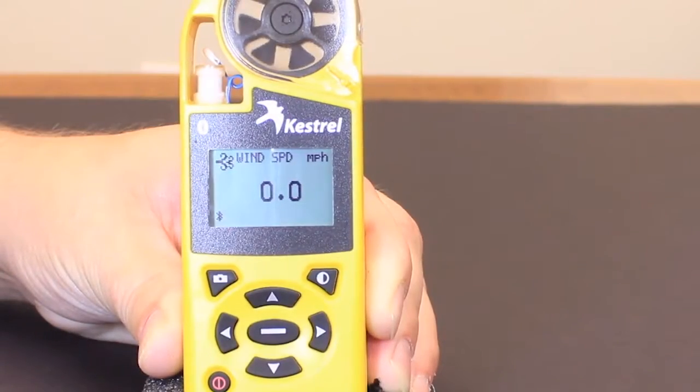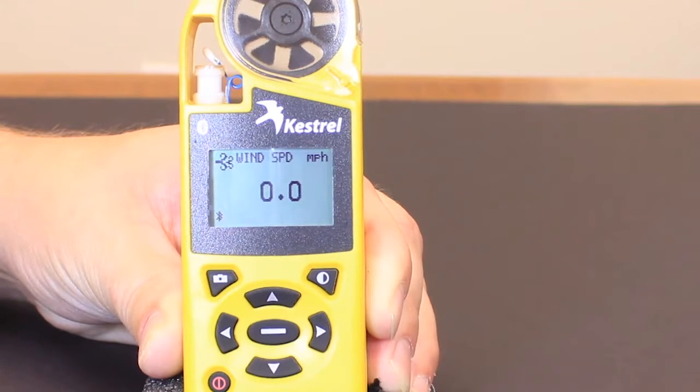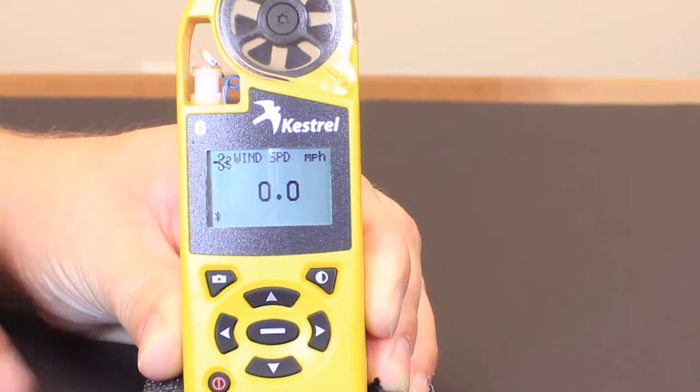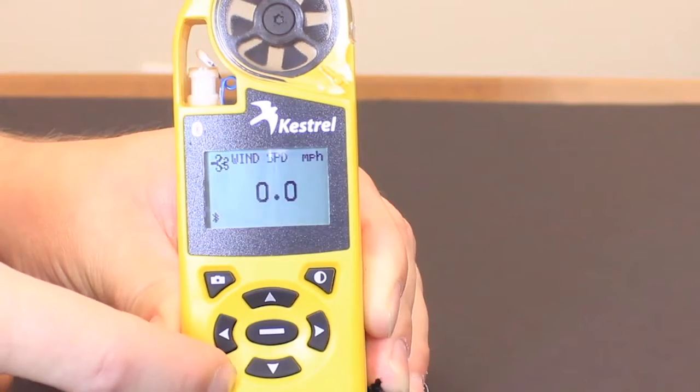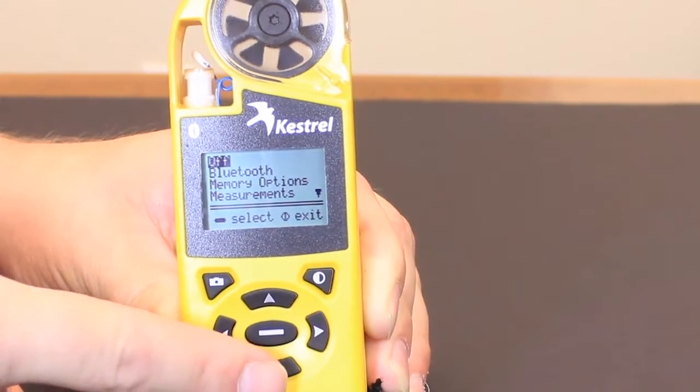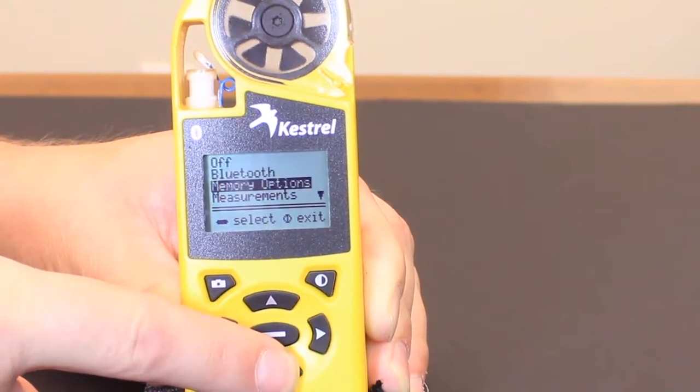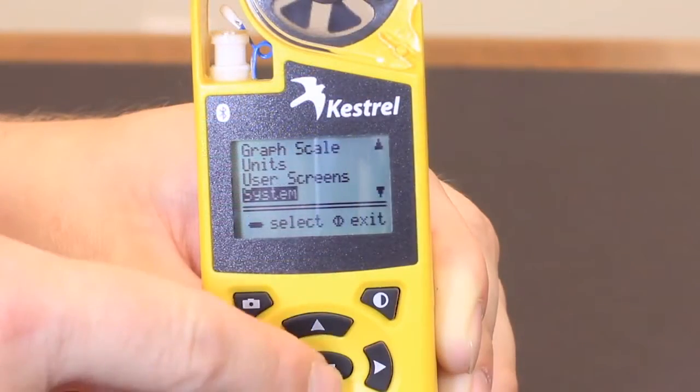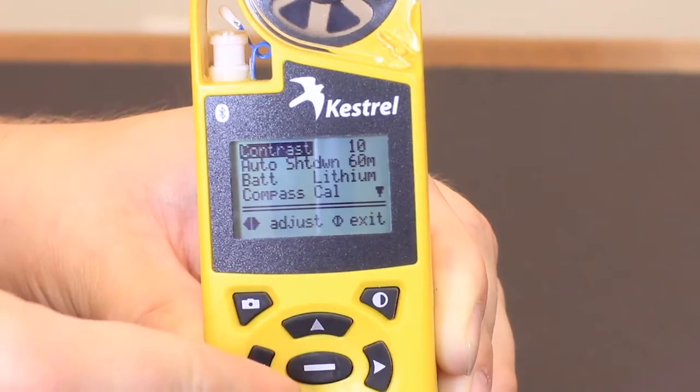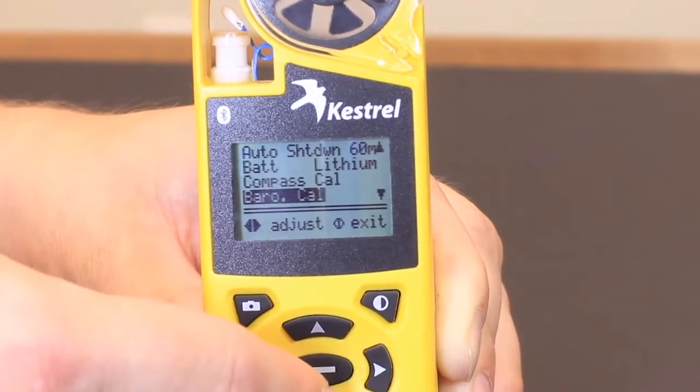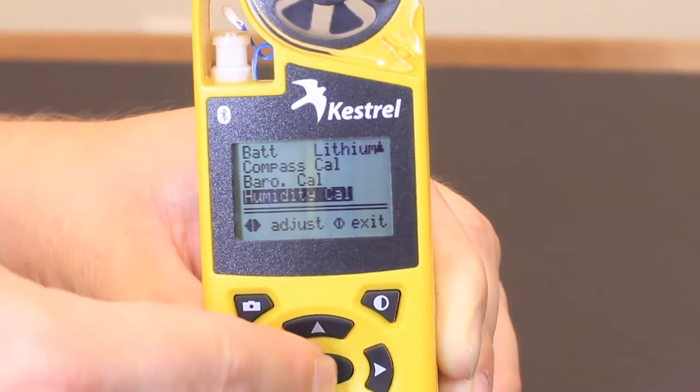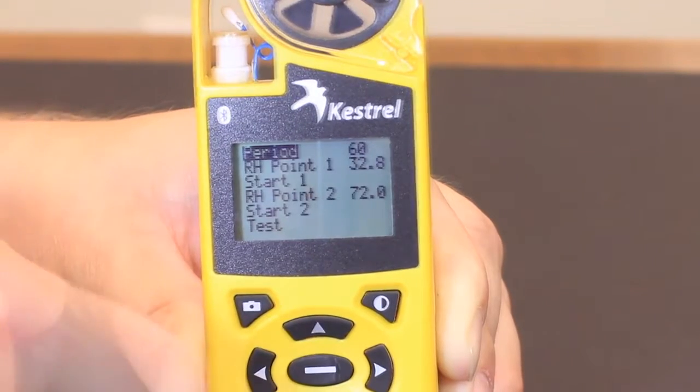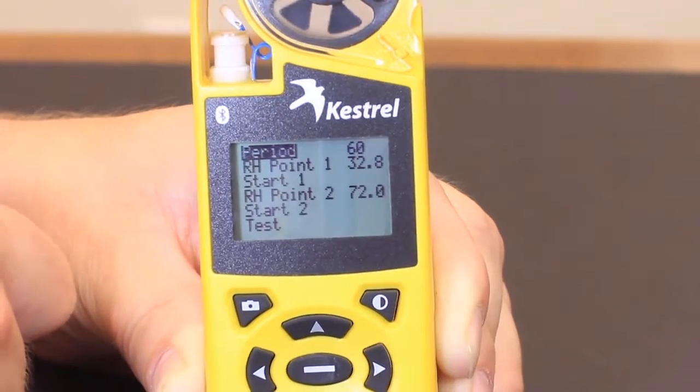In order to calibrate the humidity on the Kestrel 4000 series, you'll turn the unit on and press the power button to get to the main menu. You will scroll down until you see 'system.' Press the center button to enter the system menu and scroll down until you see 'humidity cal' and hit the center button. The period is going to be 60. That's the amount of minutes that you want to leave it in each chamber, so do not change that.